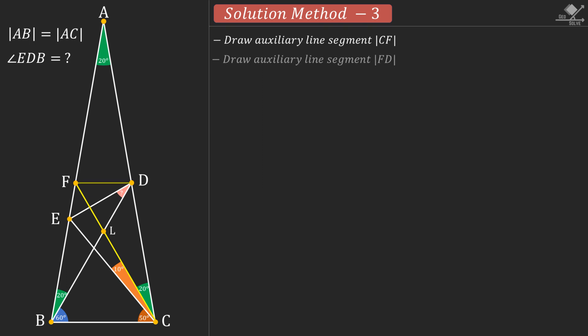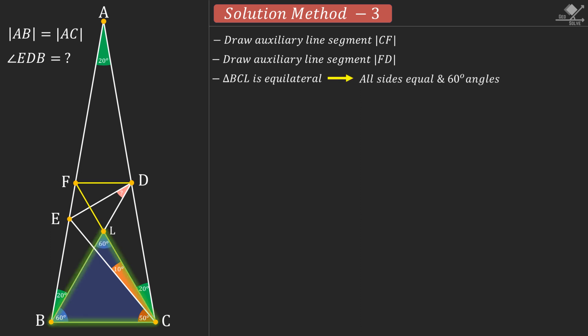Also, connect points F and D. Notice that triangle BCL will be an equilateral triangle, so all sides will be equal and internal angles will be 60 degrees. This triangle will also be an equilateral triangle, so the same things apply here as well.